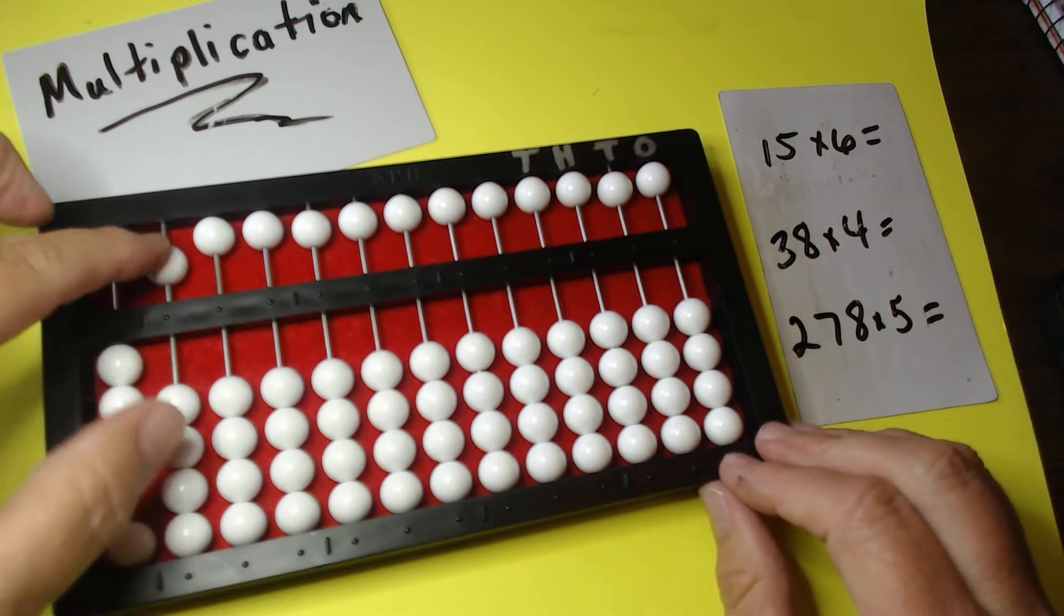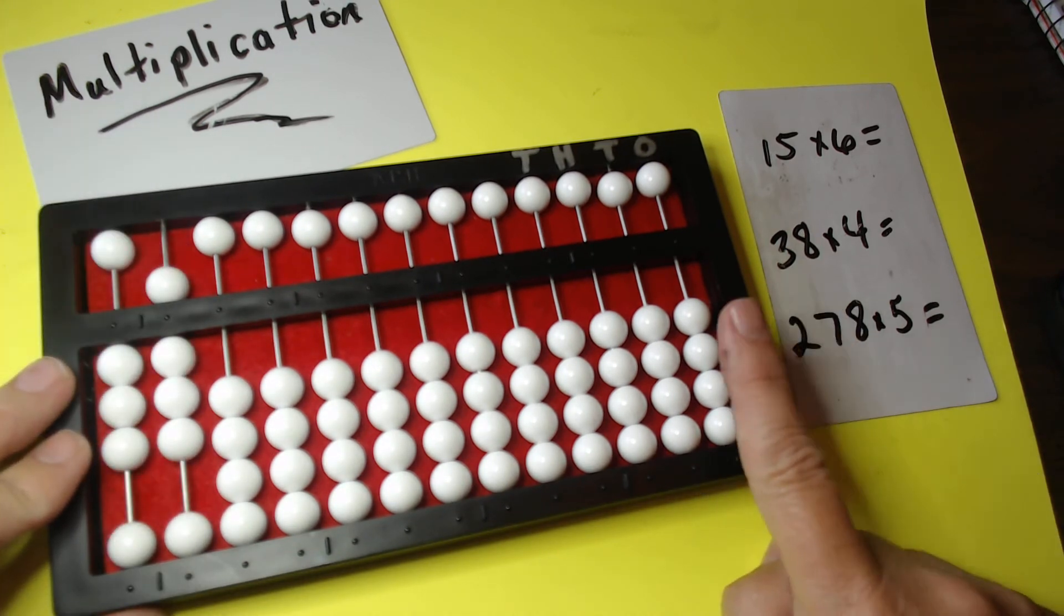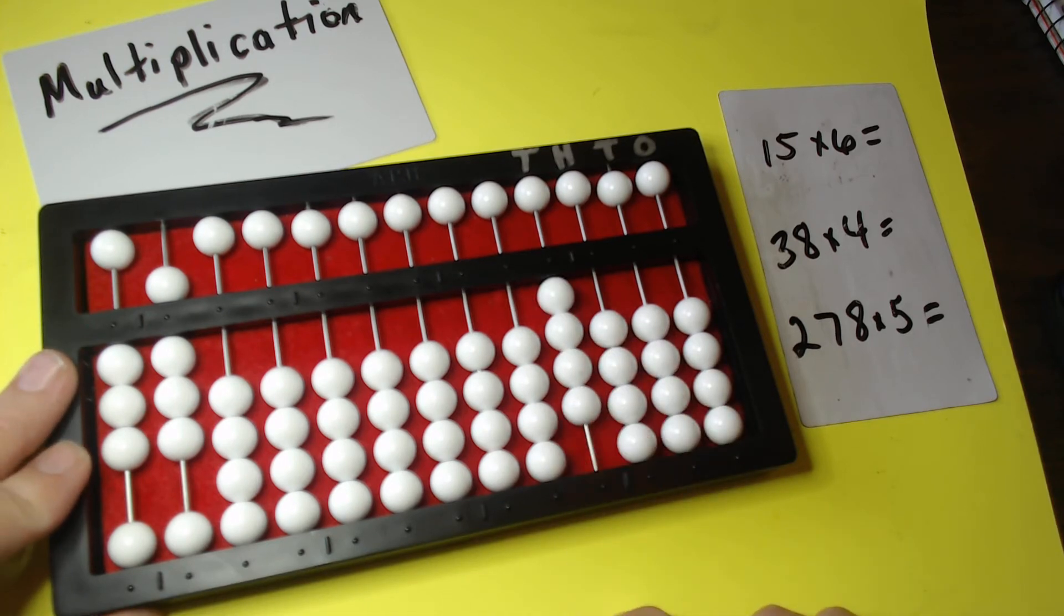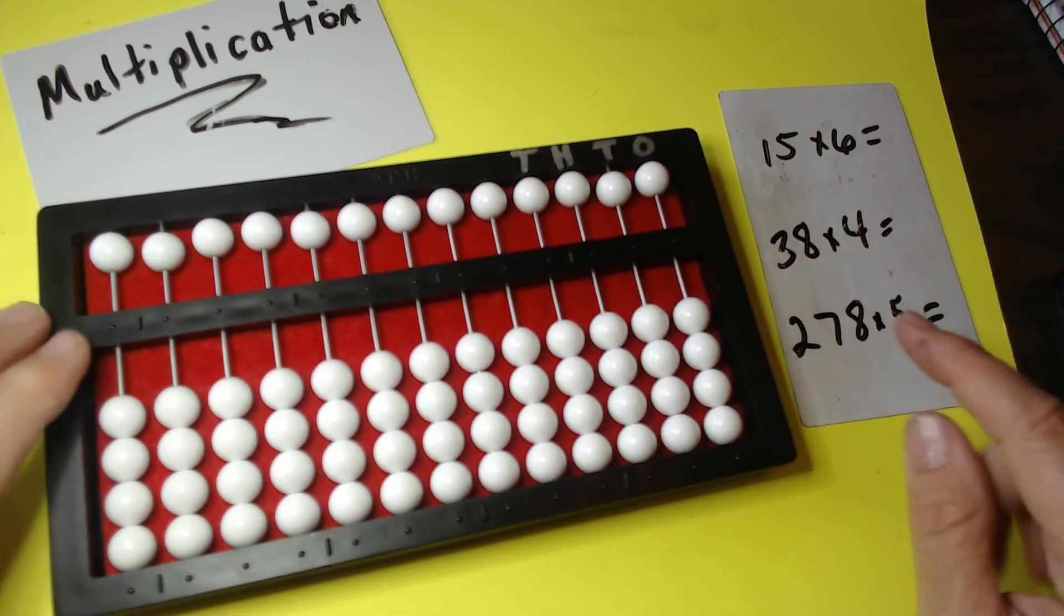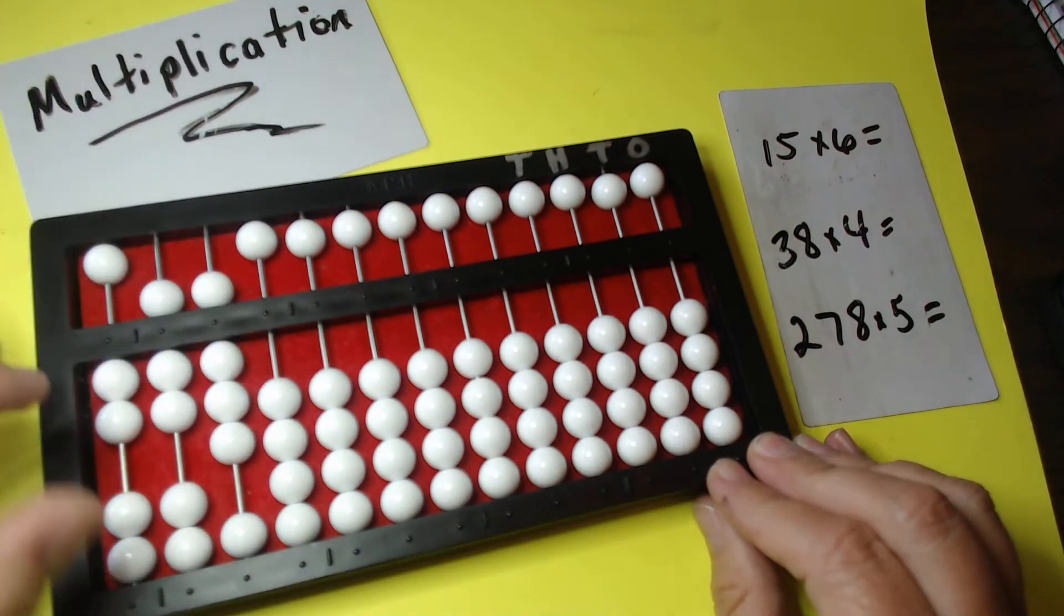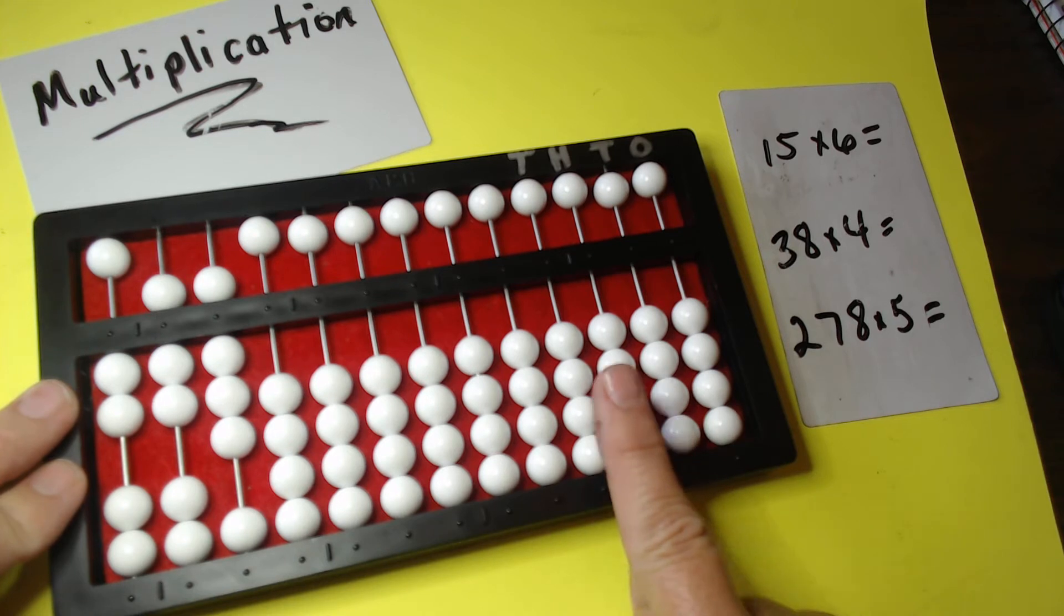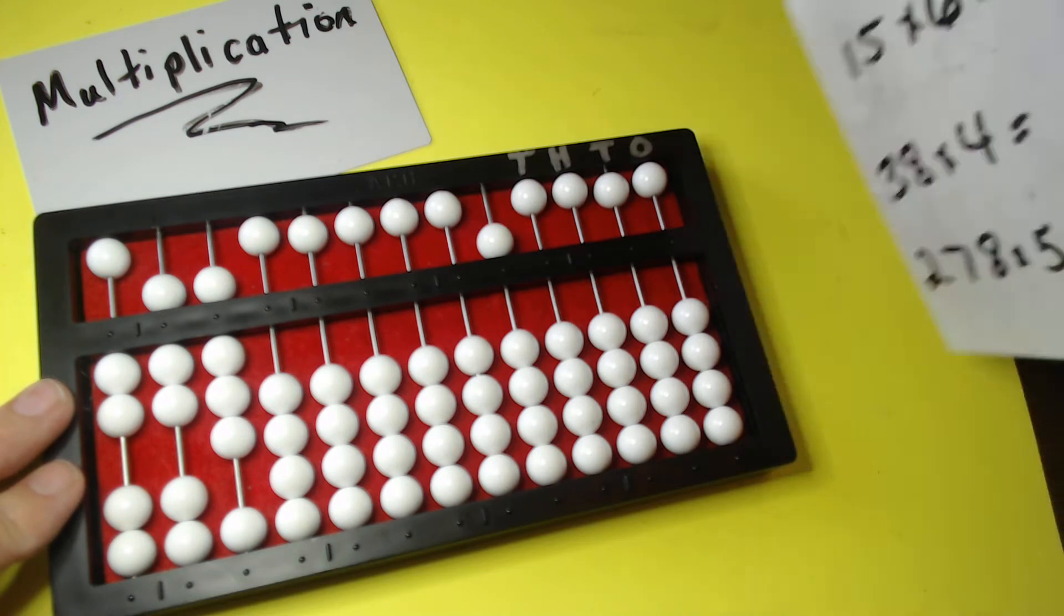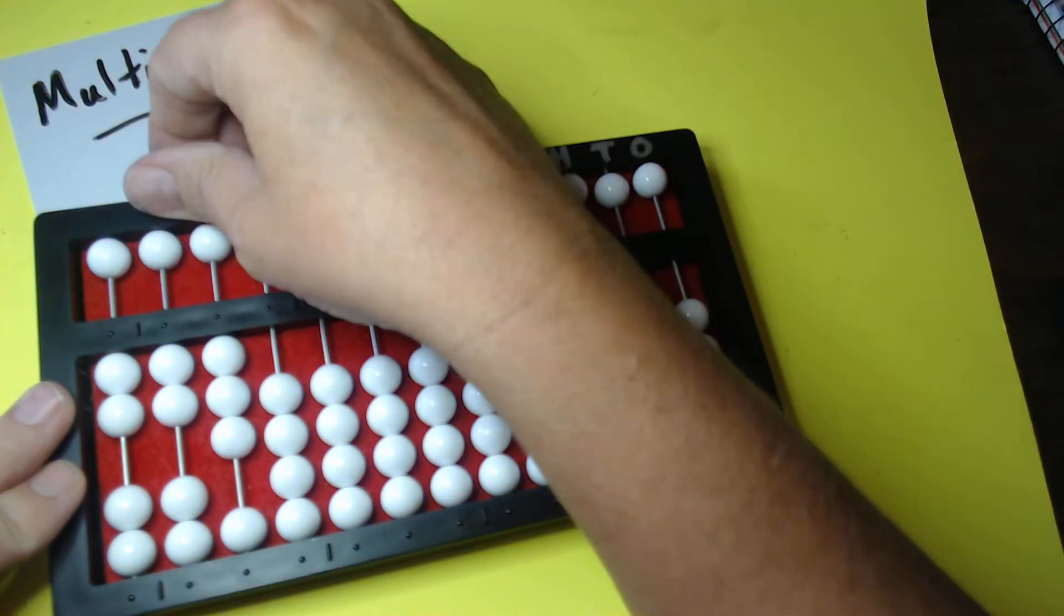38 times 4. 3, 8. Now we're going to count to do the 4. 3, 8 times 4. Set the 4 here. Again, 278 times 5. 2, 78. Let's count 2, 7, 8 times 5. So this is where we set the 5. Easy enough, but an important step that you need to remember so that your answers come out correctly.